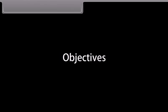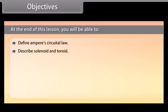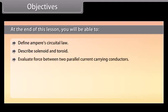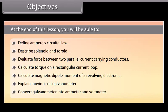Objectives. At the end of this lesson, we'll be able to: define Ampere's Circuital Law, describe solenoid and toroid, evaluate force between two parallel current carrying conductors, calculate torque on a rectangular current loop, calculate magnetic dipole moment of a revolving electron, explain moving coil galvanometer, and convert galvanometer into ammeter and voltmeter.